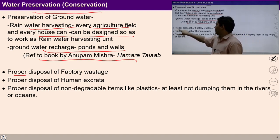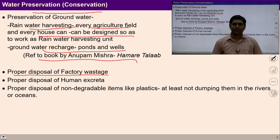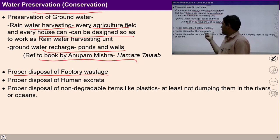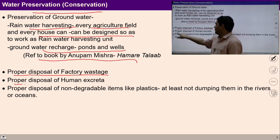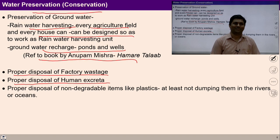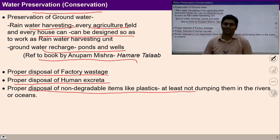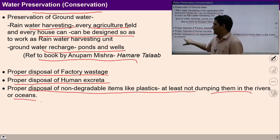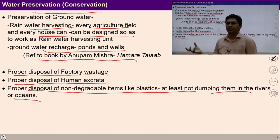What else can be done? Proper disposal of factory wastage. There are many kinds of wastages which come from factories, so there is a need to dispose them properly in a planned manner so that they do not disturb the ground level water. There is also a need to design a structure so that human excretions can be disposed in a proper manner. Proper disposal of non-degradable items like plastic — at least not dumping them in rivers or oceans — this can be ensured.